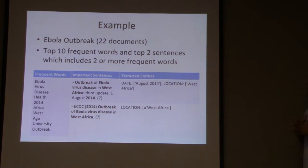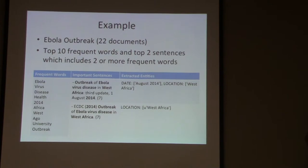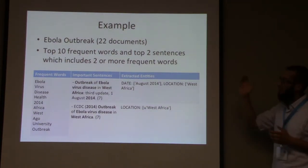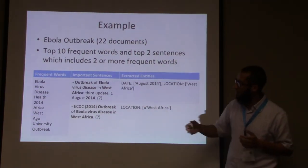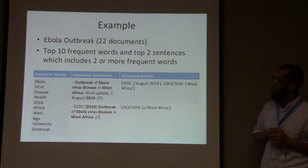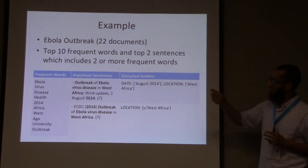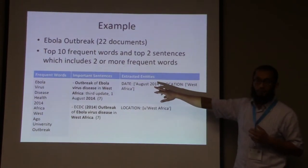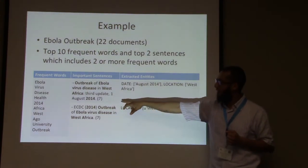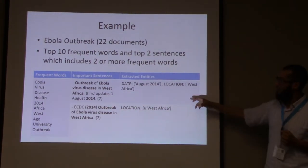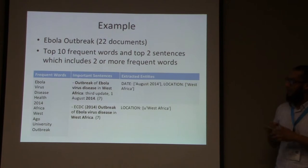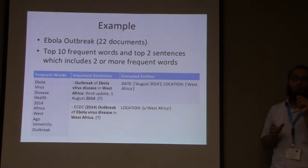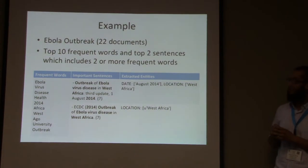I tested this on an Ebola collection — a sample of 22 documents. On the left are the top ten frequent words from the 22 documents, followed by the top sentences that contain seven or more of those ten keywords, and then the extracted locations and dates. You can see it produces very accurate information about the event itself.